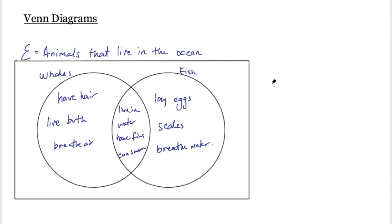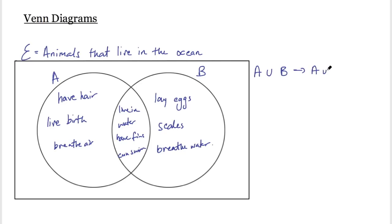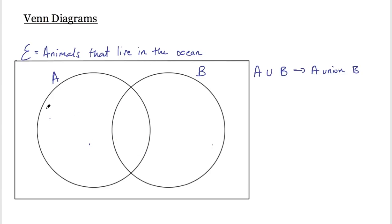We have some notation that goes along with Venn diagrams. If I relabel these sets A and B, and I wanted to ask what is everything inside both of the sets — in A or in B — we write that as A with a U then B, and this is stated as A union B. This is saying everything inside A or inside B. So we'd look at everything inside A, inside the intersection, and B. If we were to shade that area, it would be everything inside both circles.